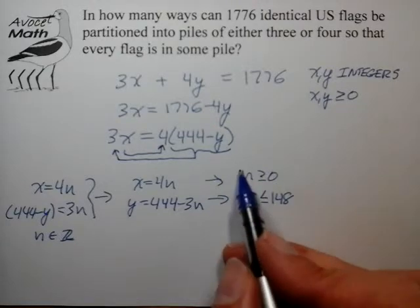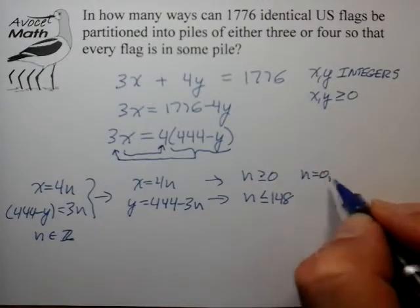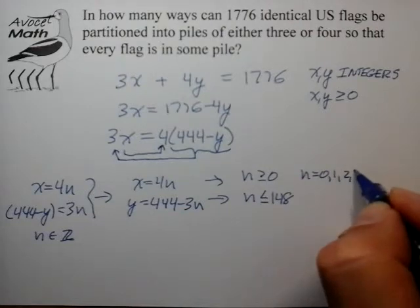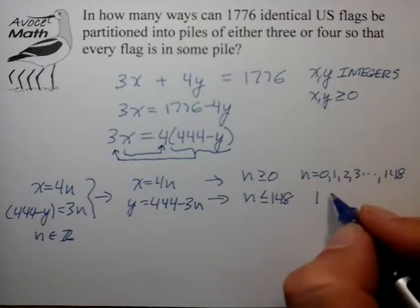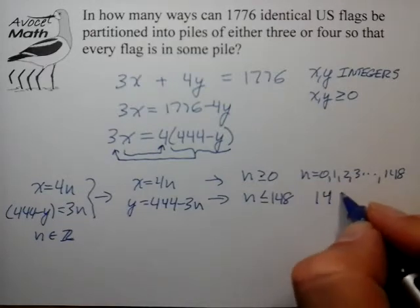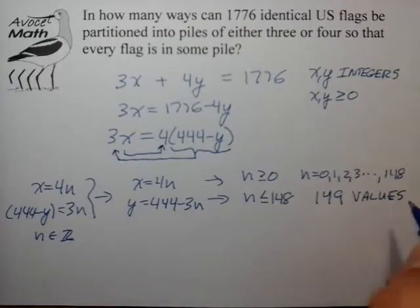And it appears that to satisfy both sets of constraints, we have n equal to 0, 1, 2, 3, and so on, up to 148 for a total of 149 values. And that's our answer.